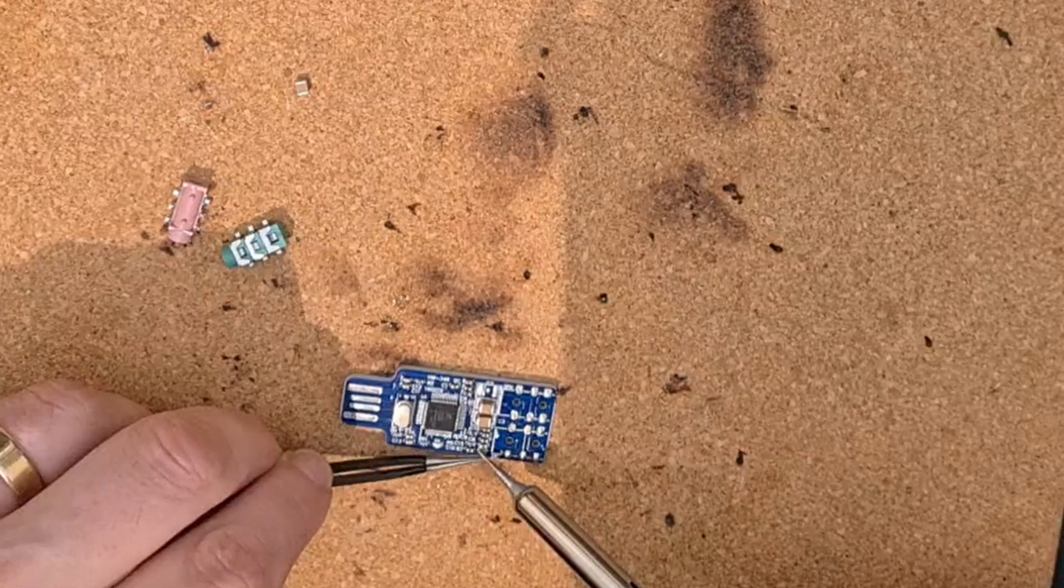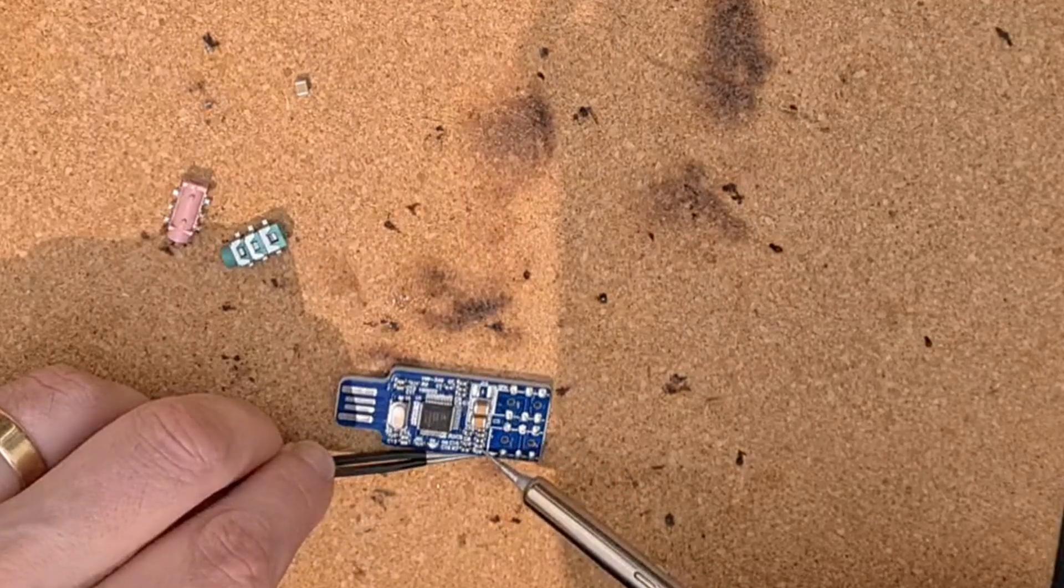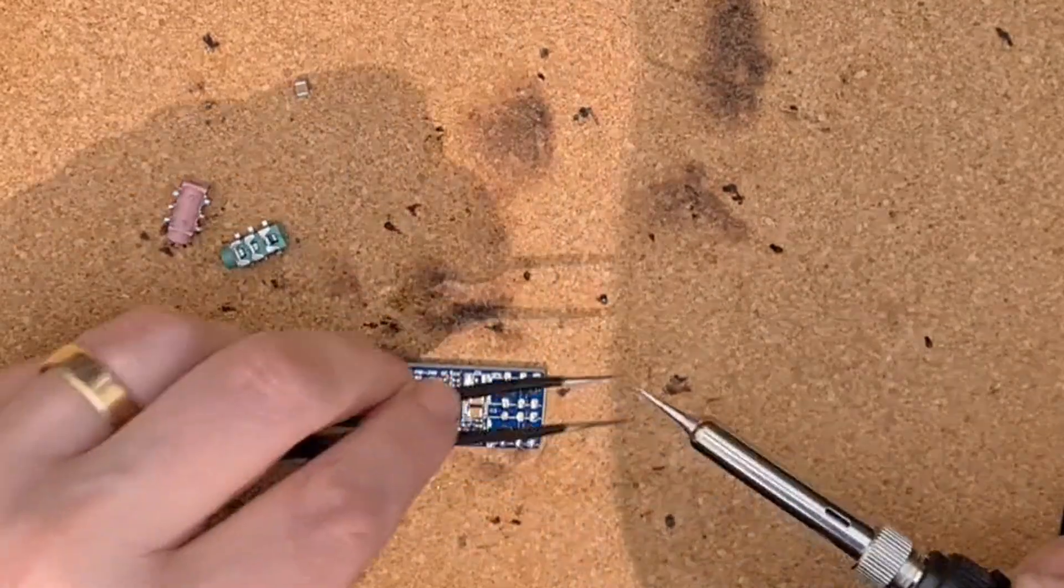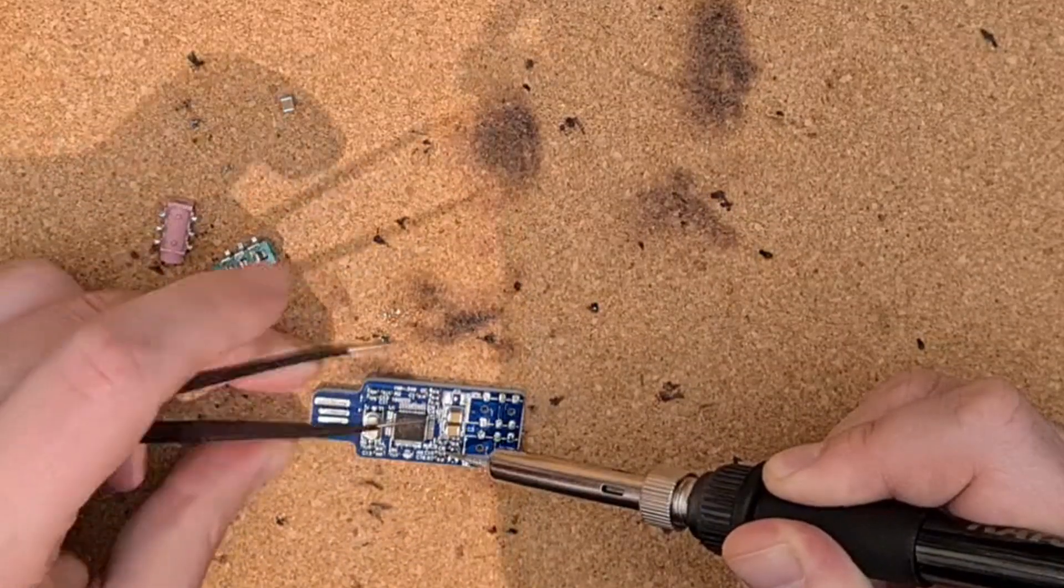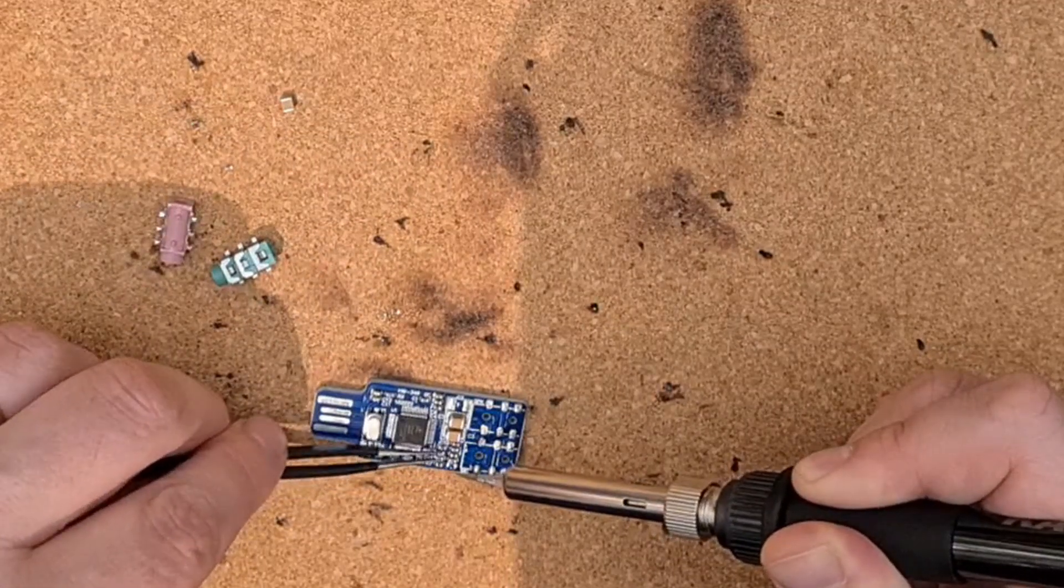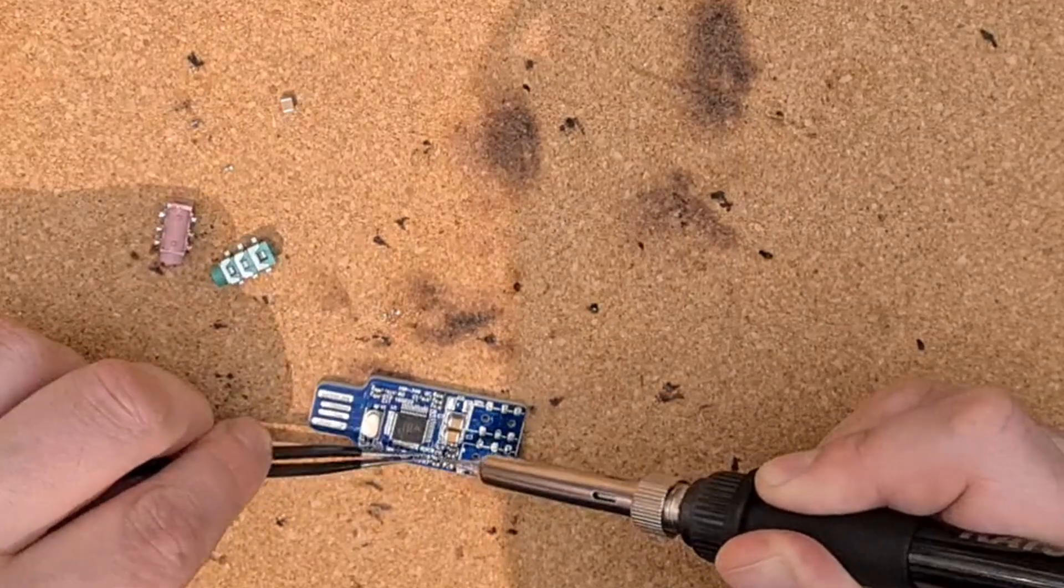Next you're going to remove two resistors, that's R7 and R6. The easiest way to do that is with a soldering iron because the heat gun just melts the whole lot together. Just a bit of pressure to pull those off with some tweezers. Once you've got those two resistors off and out of the way, then you're ready to start attaching some wires.